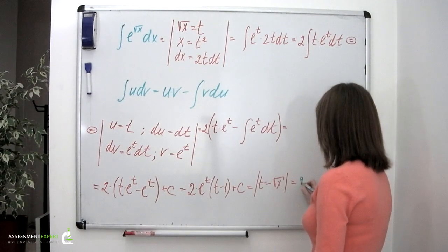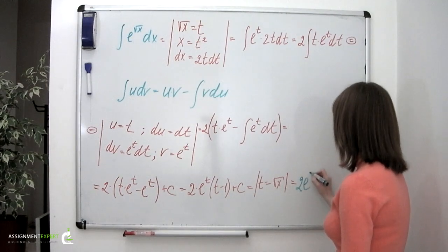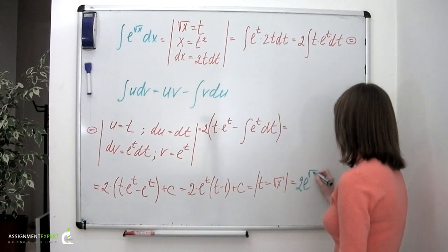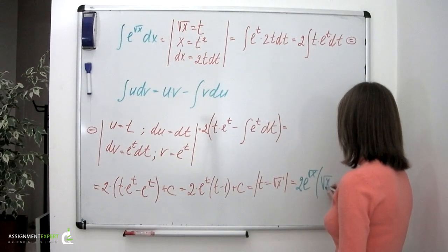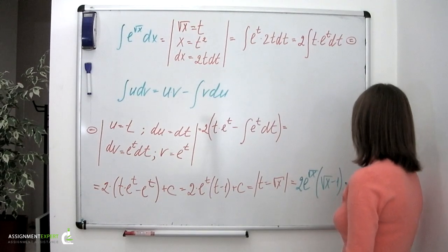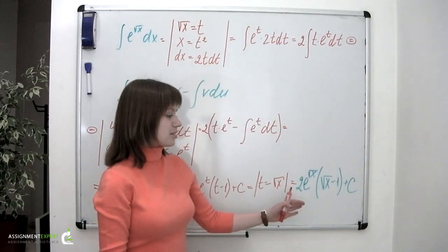Which is 2 times e to the power of the square root of x times the square root of x minus 1, plus the constant of integration. So this is our answer.